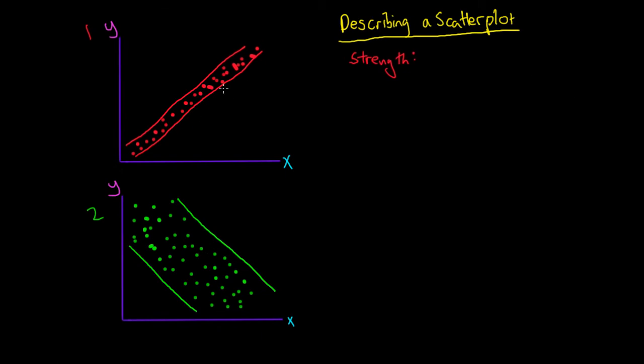So when the lines are close together, like this, we'd say that the relationship is strong. So for our first plot, number 1 over here, we'd say that there is a strong relationship.